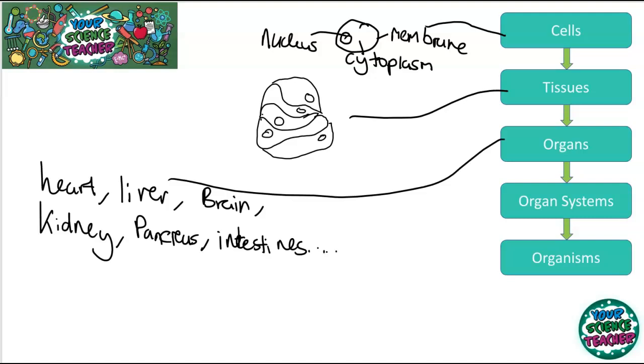Then after organs, we have organ systems. And these are organs that work together for a particular function as well. The digestive system is a type of organ system. Also the cardiovascular system, that involves the heart and lungs. The digestive system involves many organs - the pancreas, the liver, the stomach, the intestines.